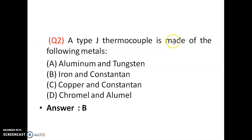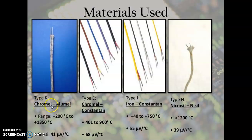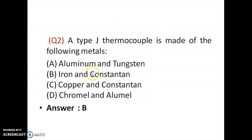Question 2: A type J thermocouple is made of the following metals. There are four types of thermocouples: type K (Chromel-Alumel), type E (Chromel-Constantan), type J (Iron-Constantan), and type N (Nicrosil-Nisil). So type J thermocouple is Iron-Constantan. Answer is option B.